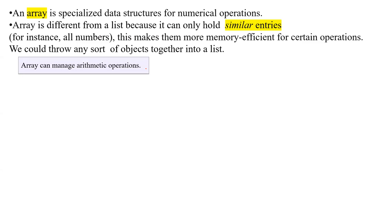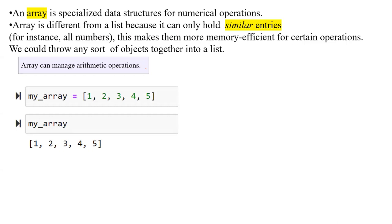Array can manage arithmetic operations. Later, you're going to see an example of how we perform different arithmetic operations on an array. For example, my_array can hold one, two, three, four, five. So please pay attention to the format: open and close the square bracket, and we list the numbers, separating them with commas.